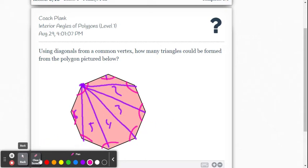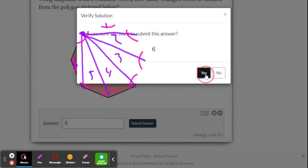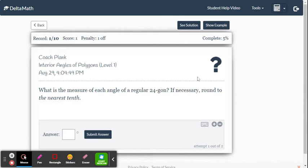But for this problem in DeltaMath, all we have to do is say how many triangles are in here. So we're going to just put six triangles. So it's always going to be two less than the number of sides every time.